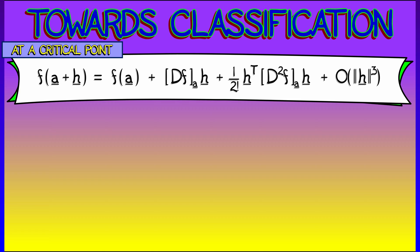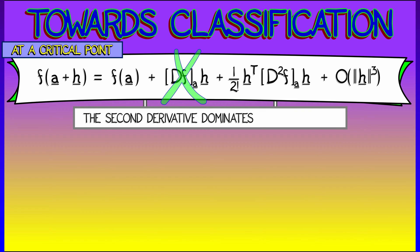We've got the zeroth order term, the first order term, the second order term, and then a bunch of other stuff that we're just going to throw into a higher order trash can using big O notation. At a critical point, the derivative vanishes, so that first order term is completely gone. Because the zeroth order term is just the height, that means that the second order terms dominate the local behavior of the function.